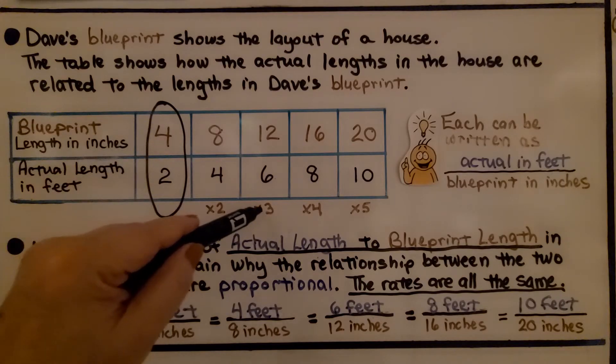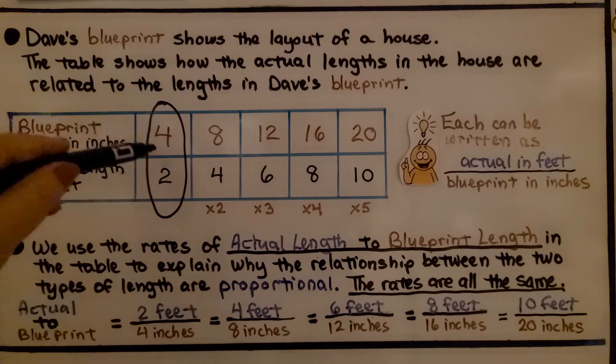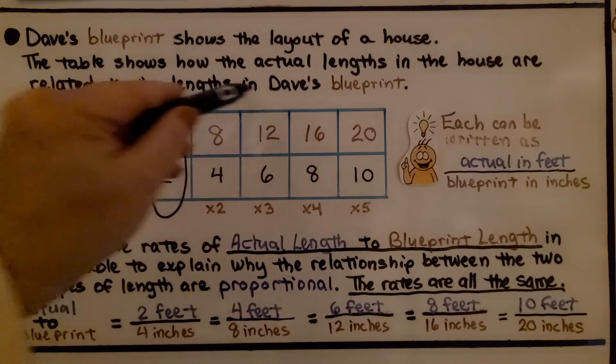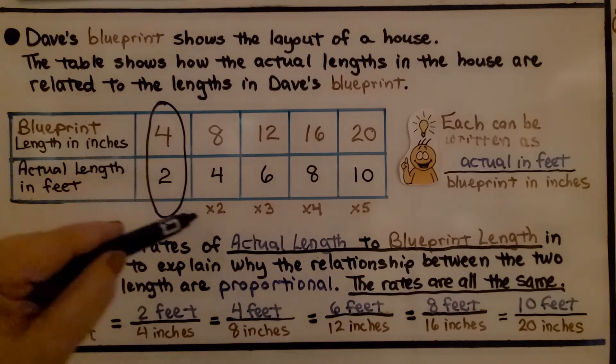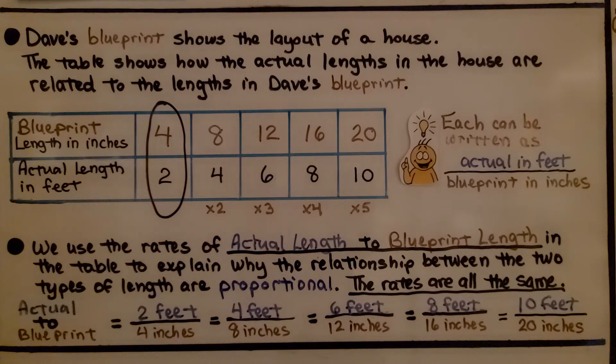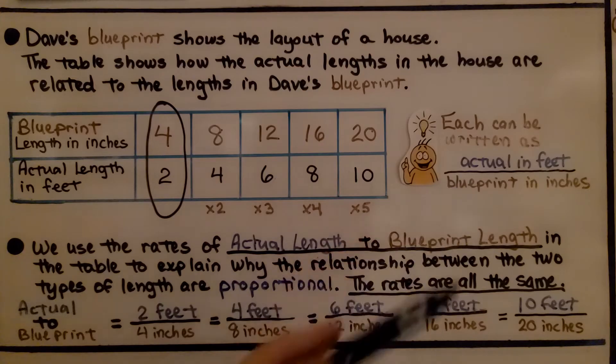And if we take these numbers and multiply them by 3, we get these numbers. Do you see that? 4 times 2 is 8. 4 times 3 is 12. 4 times 4 is 16. 4 times 5 is 20. And 2 times 2 is 4. 2 times 3 is 6. Do you see what's happening? Each can be written as actual feet over the blueprint in inches.